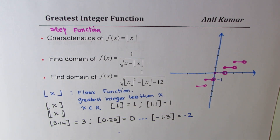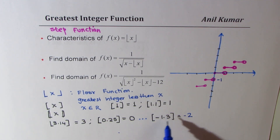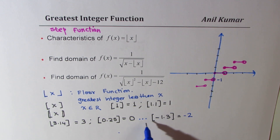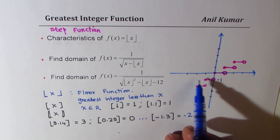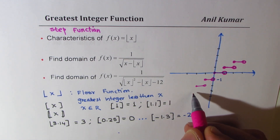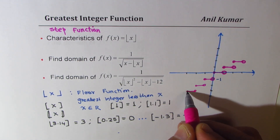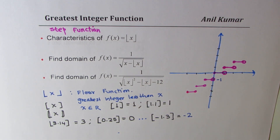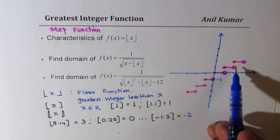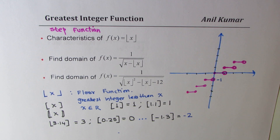That gives us a property: if we have a negative non-integer value, we take the integer part and subtract one more — it's the left side on the number line. That is how it works. We sketch it in steps like this. It is called a step function, as you can see.